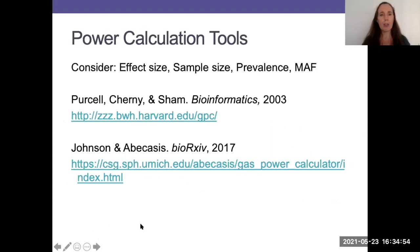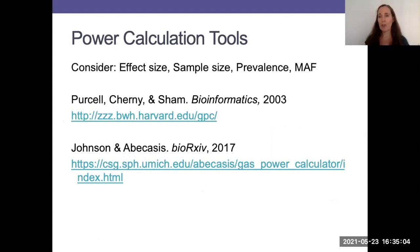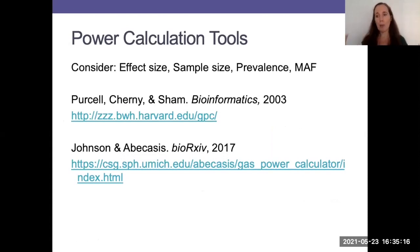Here are some resources for power calculation. You need to consider what the expected effect size is, what your sample size is, and if it's a case-control study, you need to think about the prevalence of the disease. You also need to consider what the minor allele frequency is, because just because you have power for some alleles doesn't mean you'll have power for all alleles — they are not equally represented in the population.